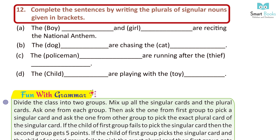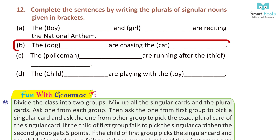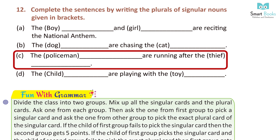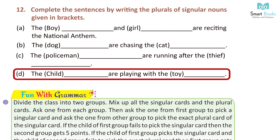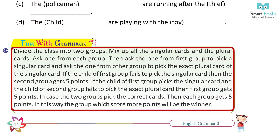Exercise 12. Complete the sentence by writing the plural of singular nouns given in brackets. A. The dashes and dashes are reciting the national anthem — boys, girls. B. The dashes are chasing the dashes — dogs, cats. C. The dashes are running after the dashes — policemen, thieves. D. The dashes are playing with the dashes — children, toys.